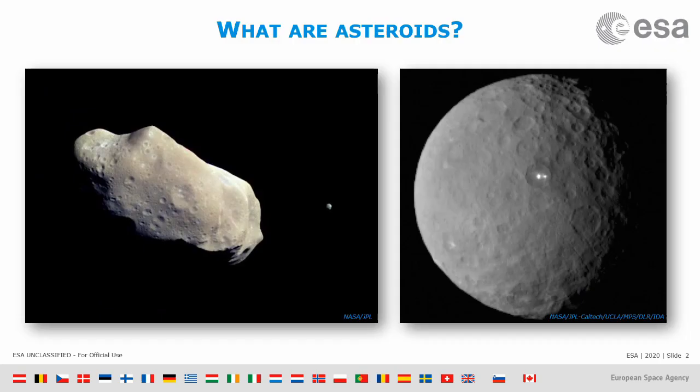Let's start with an introduction to what asteroids are. The object you see on the left is a very typical asteroid. As you can see it looks like a rock, like a piece of stone. It's kind of irregular in shape and most asteroids, especially the small ones, look like that. The one to the right is more or less spherical and it's the largest of the asteroids we know in our inner solar system, about a thousand kilometers in diameter. In terms of sizes they go from a thousand kilometers down to very small sizes, basically pebbles.